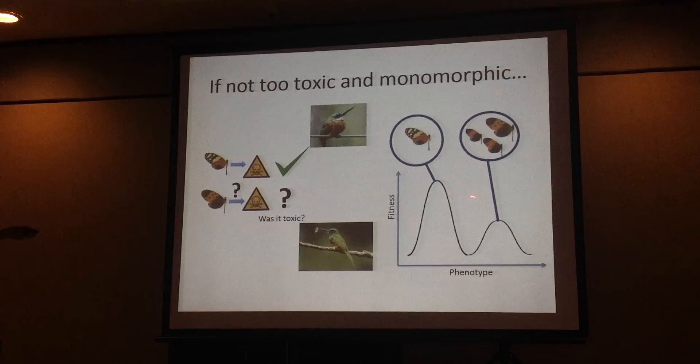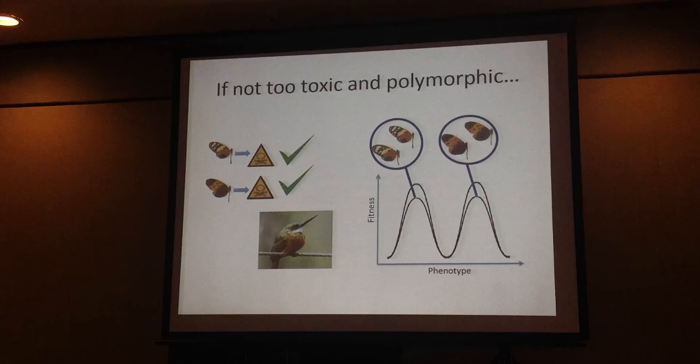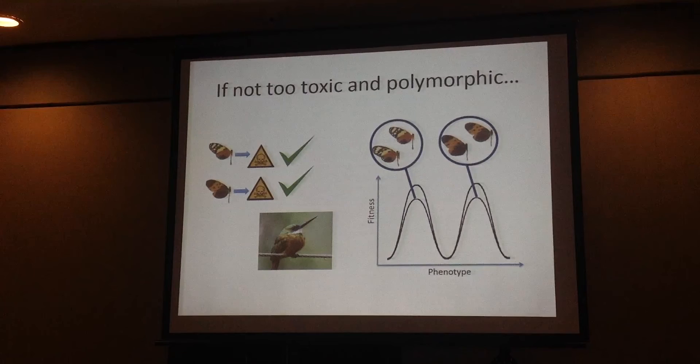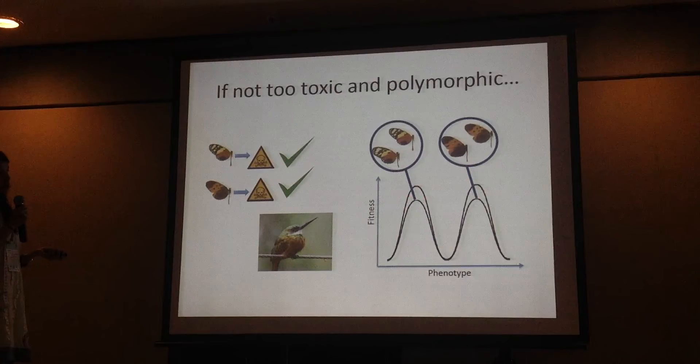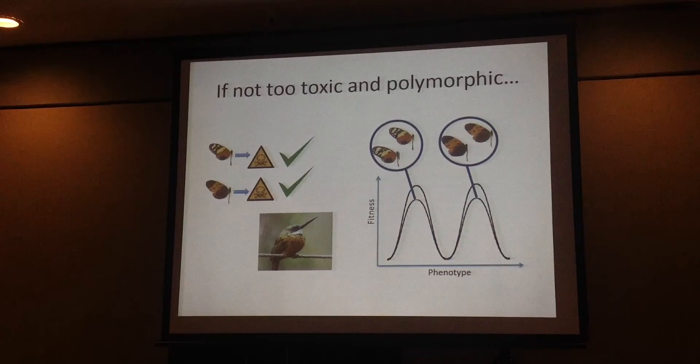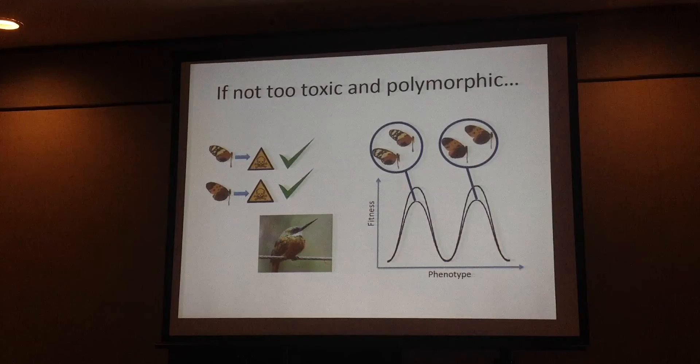So then the fitness of the butterflies with that warning signal would be lower. What happens if this not-so-toxic species is polymorphic? Then it becomes an advantage of the rare — despite the fact that the fitness of both warning signals would be affected, it would only be slightly affected, and the association would still be present, so the birds would still recognize them as toxic species.